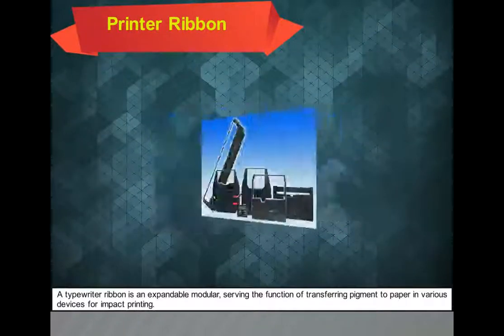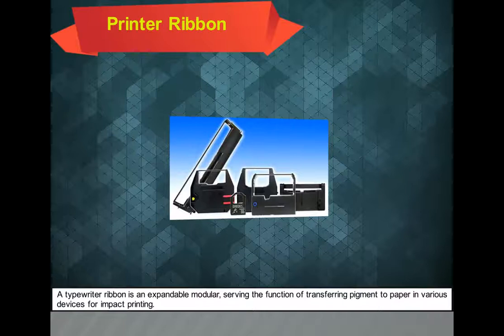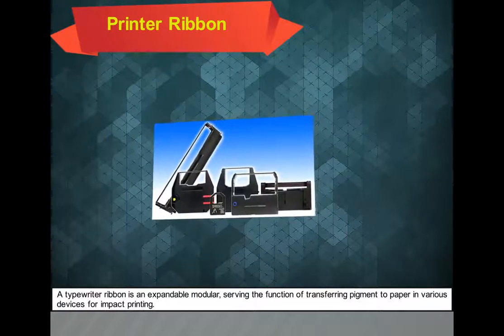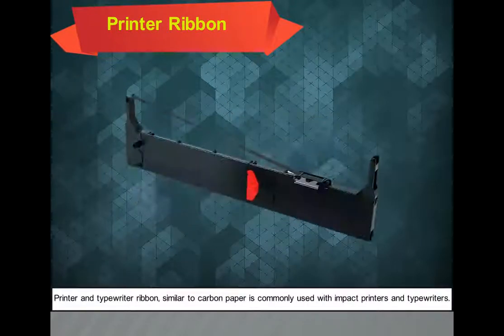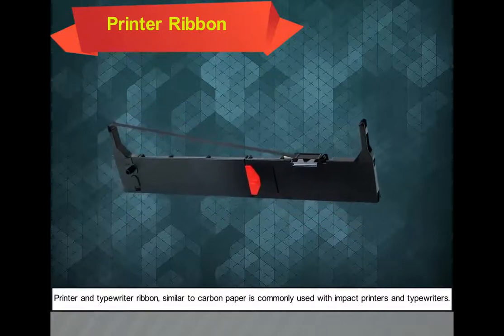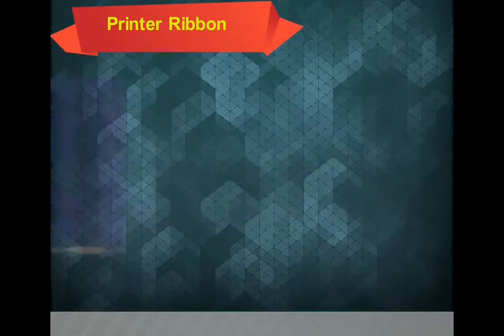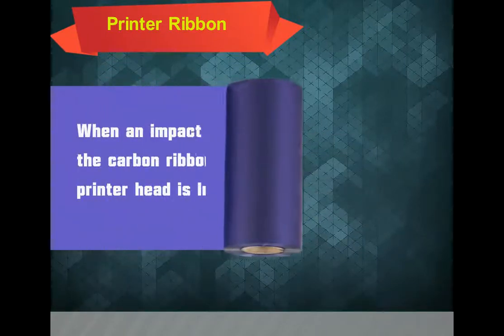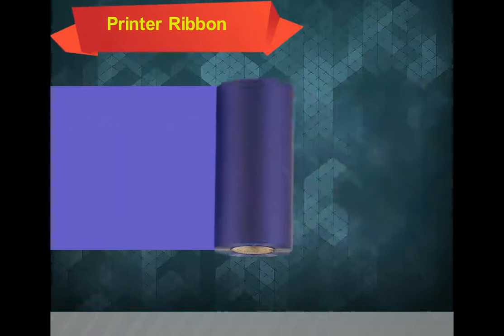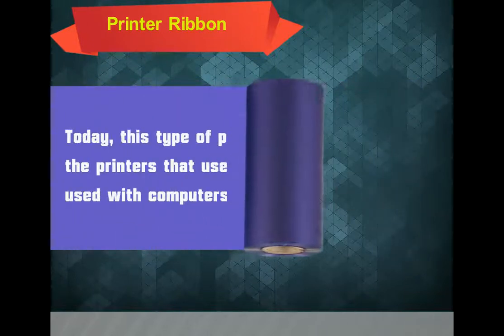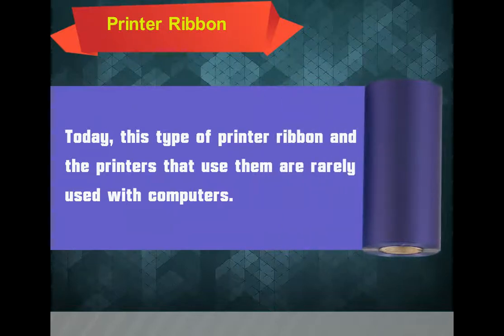Printer ribbon: a typewriter ribbon is an expandable module serving the function of transferring pigment to paper in various devices for impact printing. Printer and typewriter ribbons, similar to carbon paper, are commonly used with impact printers and typewriters. When an impact printer head hits the carbon ribbon, a mark is left on the paper. Today, this type of printer ribbon and the printers that use them are rarely used with computers.